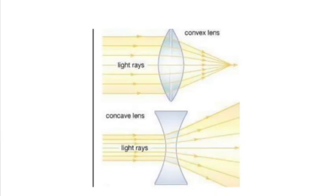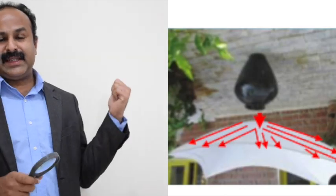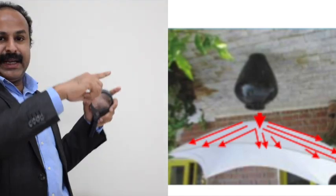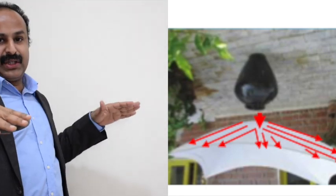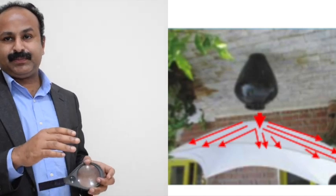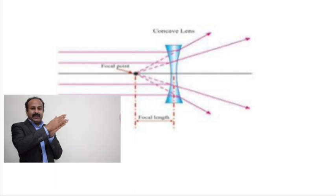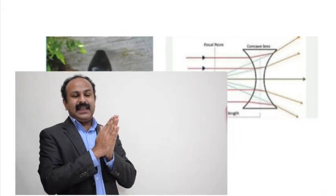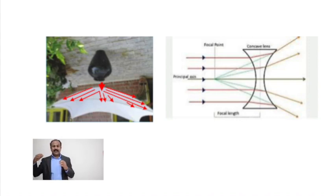Now we will study about concave lens. A concave lens is also called a diverging lens, while a convex lens is a converging lens. Have a look at this diagram — it is just the opposite of the first diagram. If you pour water from a jar into a shape like this, water coming from a single point will be diverged in all directions. In a concave lens, when a parallel beam of light passes through it, after refraction the light rays will be diverged.